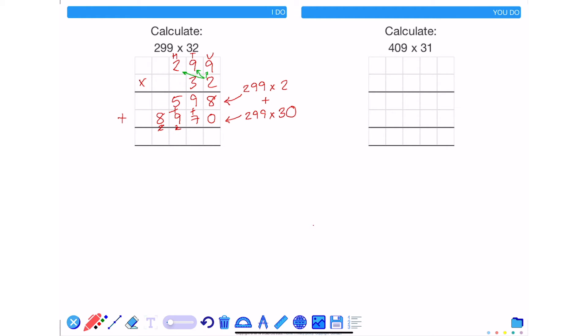And I need to add these two numbers together to find the total. 8 add 0 is 8. 9 add 7 is 16. 5 add 9 add 1 is 15. And 8 add 1 is 9. Be careful that when you add these numbers up that you don't add on the numbers that you've carried on previously.